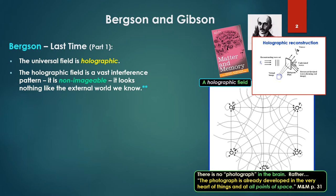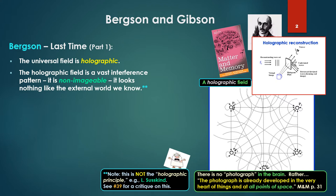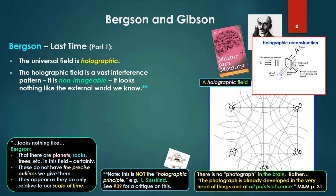A very quick review from what we discussed last time. First, in Bergson's scheme, the universe is holographic. This holographic field of the universe is a vast interference pattern. It is non-imageable. It looks nothing like the external world we know. Note, this is not the holographic principle à la Lenny Susskind - see number 39 for a critique. When we say it looks nothing like, we're visualizing a field where everything is interacting, each point with the whole. As Bergson said, there are planets, rocks, trees, etc., in this field. But these do not have the precise outlines we give them. They appear as they do only relative to our scale of time. Any given object is interacting with all the rest.